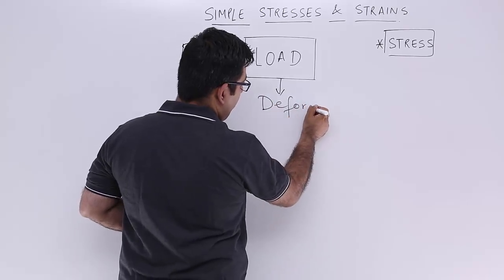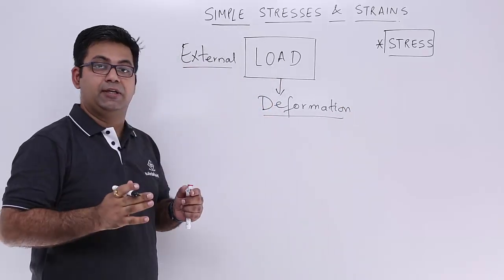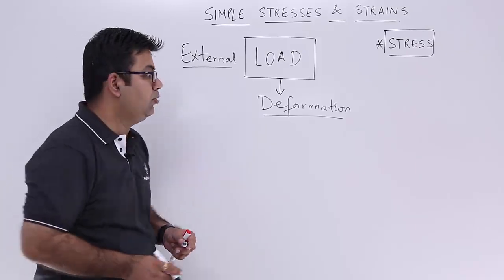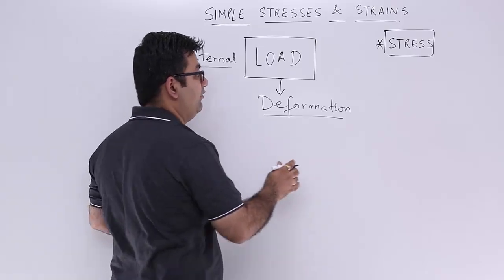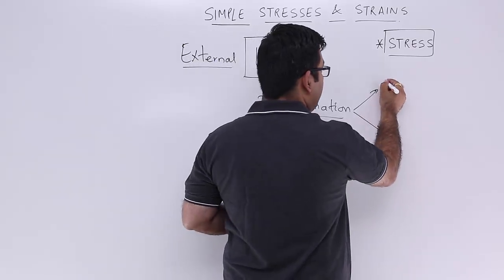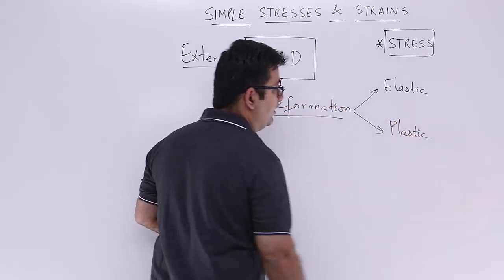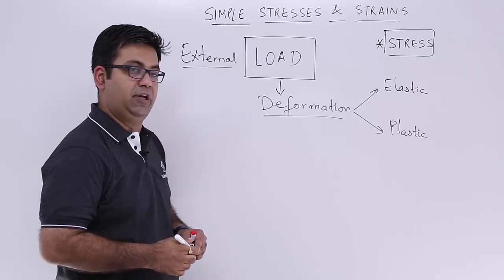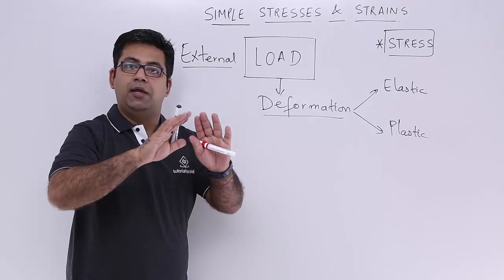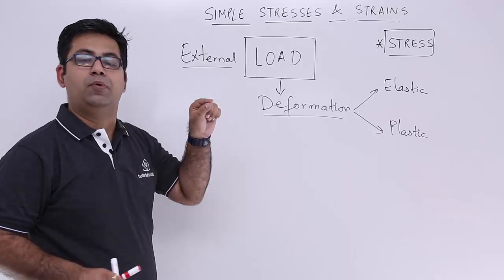When you apply external load onto a body, what happens? The result of this external load is deformation. Deformation to engineers is not a very good thing, because every engineer would not want their material to be deformed. We will categorize deformation into two parts — elastic deformation and plastic deformation — at later stages, but this video will focus on understanding stress.